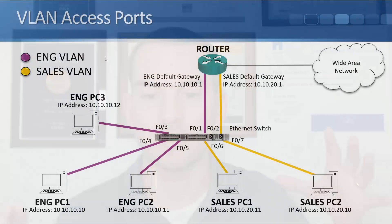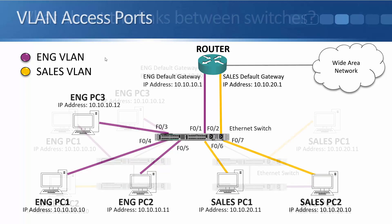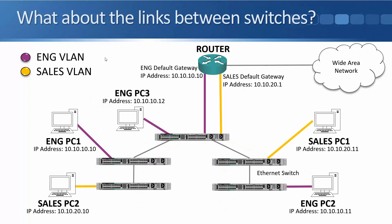In this lecture you'll learn about VLAN trunk ports. We covered access ports in the previous lecture. You saw in the example lab topology we had a switch with some engineering and some sales PCs plugged in, which were in different IP subnets at layer 3. We also put them into different VLANs at layer 2, and that segmented the broadcast domains at both layer 2 and layer 3, giving us better performance and better security. But what about the links between switches?